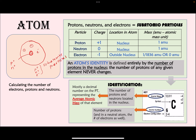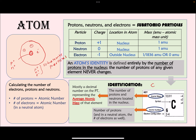Nuclear charge is the charge on the nucleus and depends on the number of protons, since neutrons have no charge. For example, hydrogen has one proton, so its nuclear charge is +1. Atomic charge is the overall charge on the atom. For a neutral atom, the number of protons and electrons are equal, so the charge is zero since positive and negative cancel out.